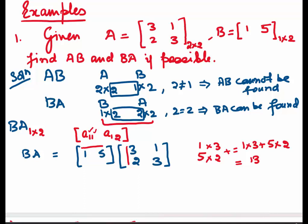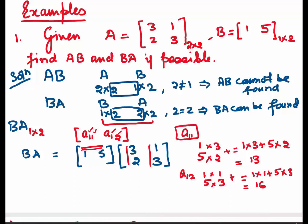Next, we need to find A₁₂, which means 1st row and 2nd column. The 1st row is [1, 5]; write it vertically, and write the 2nd column [1, 3] next to it. Multiply and add: 1×1 + 5×3 = 1 + 15 = 16. So A₁₂ = 16. The product BA = [13, 16]. Remember, it's always rows multiplied with columns.